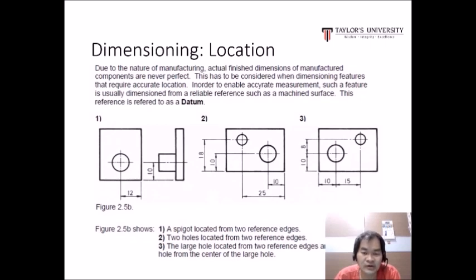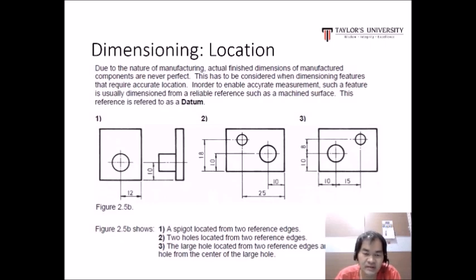For dimensioning locations: due to the nature of manufacturing, actual finished dimensions of manufactured components are never perfect. This must be considered when dimensioning features that require accurate locations. Such a feature is usually dimensioned from a reliable reference such as a machined surface — this reference is referred to as a datum. Figure 1 shows a spacer located from two reference edges, figure 2 shows two holes located from two reference edges, and figure 3 shows a large hole located from two reference edges.